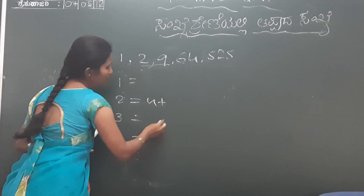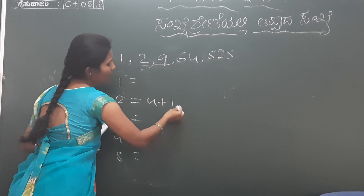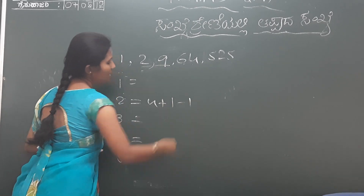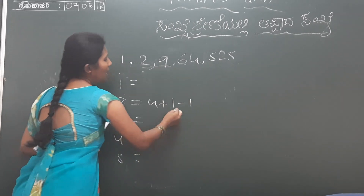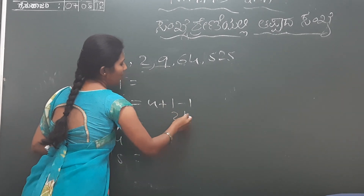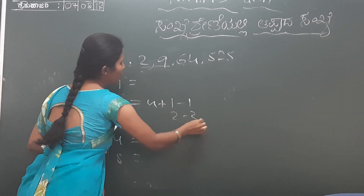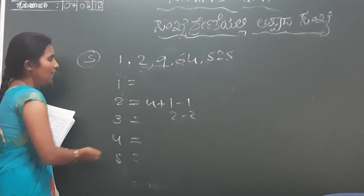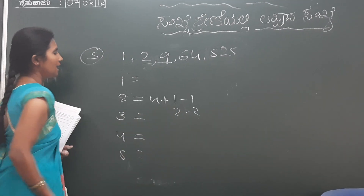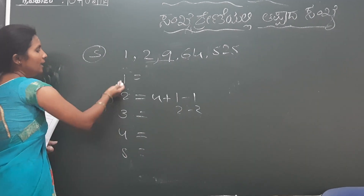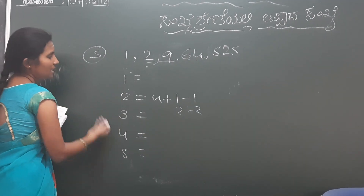4. You can see this thing. You can see 4 as well as minus 1, besides you, the power of 2.